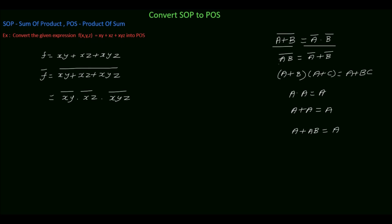Then apply the theorem (ab) complement equal to a complement plus b complement. So expanding each term: (xy) complement equal to x complement plus y complement; (xz) complement equal to x complement plus z complement; (xyz) complement equal to x complement plus y complement plus z complement.